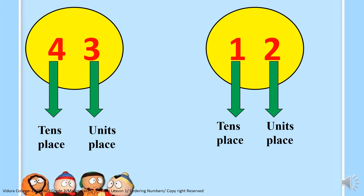Now, how to find whether the number is big or small? First, you have to see the units place and see what's big — is it 3 or 2? Yes, 3 is bigger than 2. Now we go to the tens place and check what's the big number. Is it 4 or 1? Yes, it's 4 — 4 is bigger than 1. So the number 4 and 3 were bigger than number 1 and 2. We can tell that 43 is the bigger number.